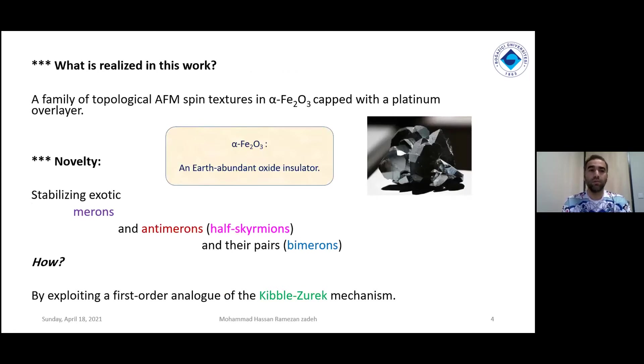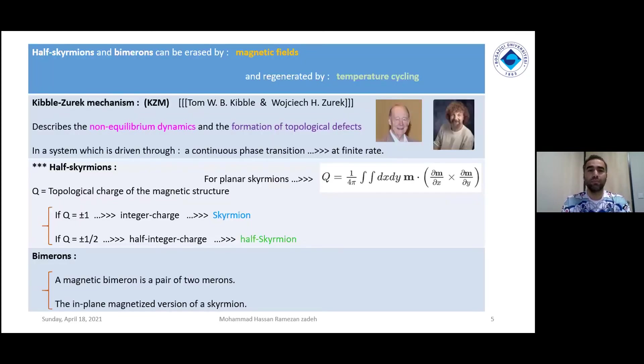In this work, the authors realized a family of topological antiferromagnetic spin textures in hematite, which is an earth-abundant oxide insulator. The novelty of this work is stabilizing exotic merons and anti-merons, which are called half-skyrmions, and also the pairs of merons and anti-merons, which are called bimerons. They use the first-order analog of the Kibble-Zurek mechanism. Half-skyrmions and bimerons can be erased by magnetic field and regeneration can be achieved by temperature cycling, cooling and heating.